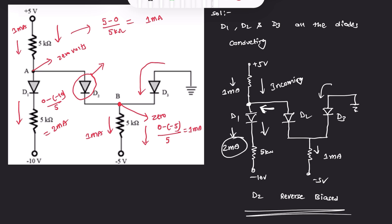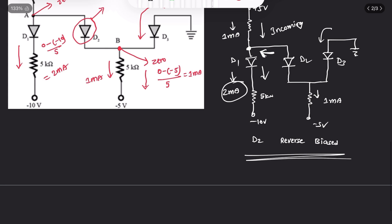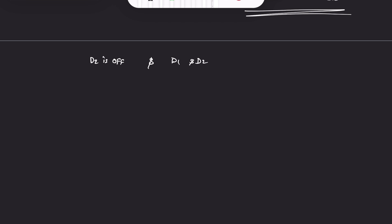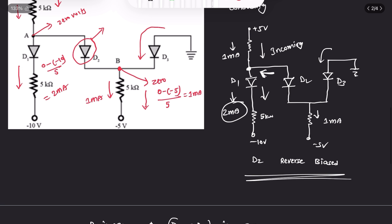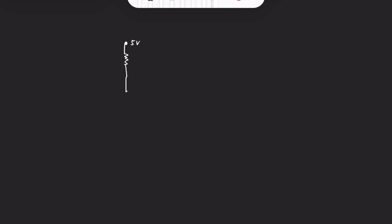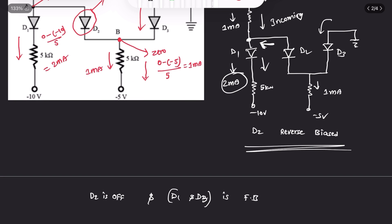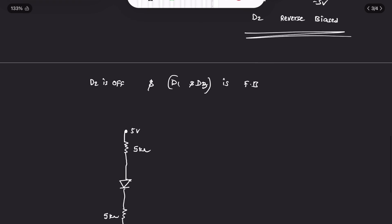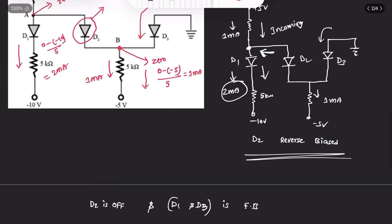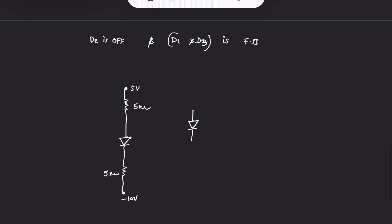We now solve with D2 off and D1 and D3 in forward condition. Because D2 is reverse biased, it acts as an open circuit, and the circuit breaks into two independent pieces. One part has the +5V source with a diode and 5 kΩ resistor connected to -10V, and the other part has -5V connected through 5 kΩ.